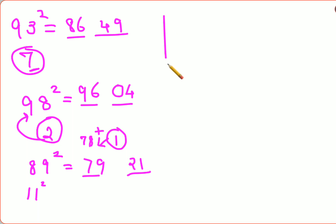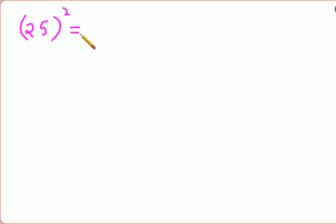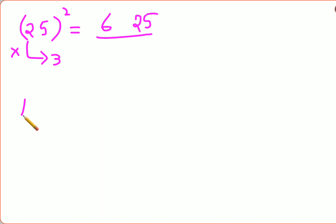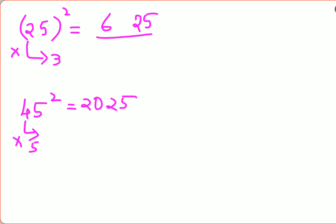Before the universal method, here's an easy trick for numbers ending in 5. The last two digits of the answer are always 25. Then multiply the leading digit by the next number in sequence. For 25 squared: 2 times 3 is 6, so the answer is 625. For 45 squared: 4 times 5 is 20, so the answer is 2025.